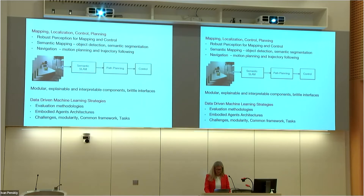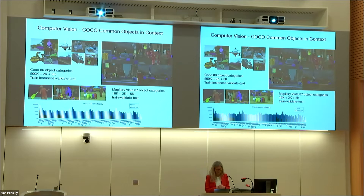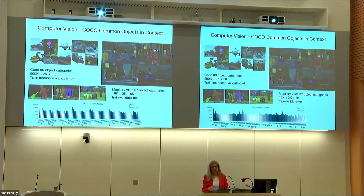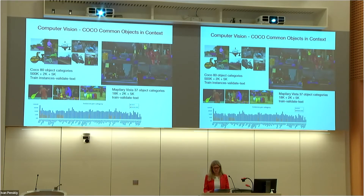In computer vision, there has been a lot of work on semantic understanding of environments. However, computer vision environments are usually comprised of internet images — data gathered from photo sharing sites — with labeling of individual objects of interest, then training models to recognize and localize those objects. The most commonly used object categories number about 80 to 100, and the performance of these techniques is about 80% accuracy on average on these types of datasets.